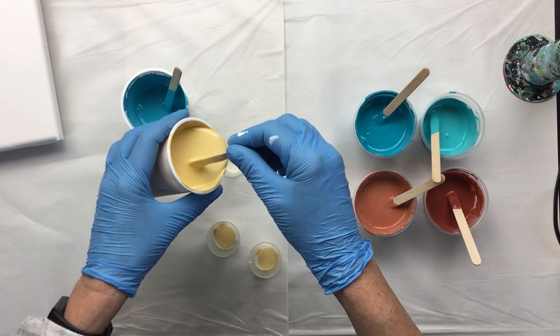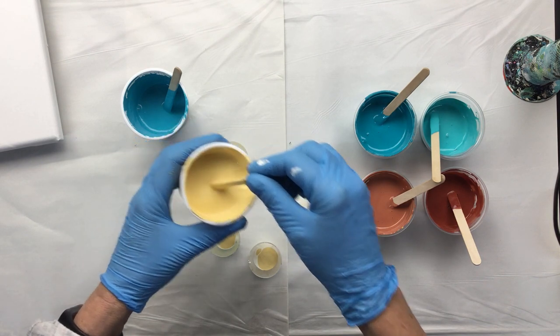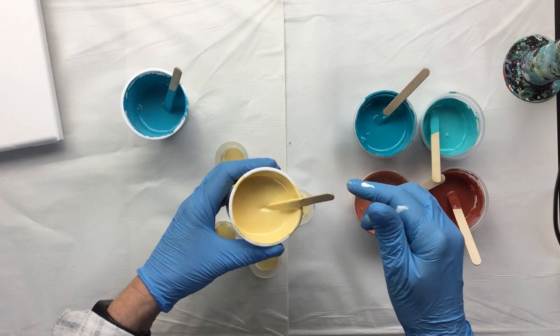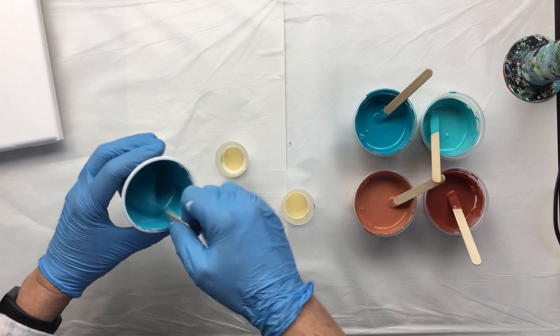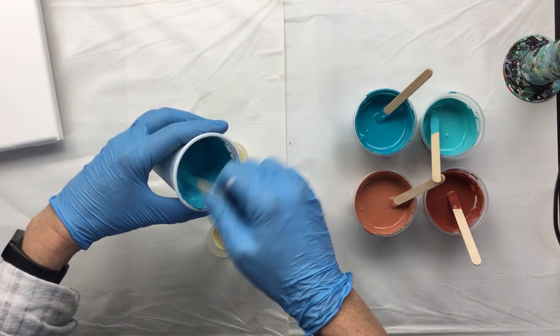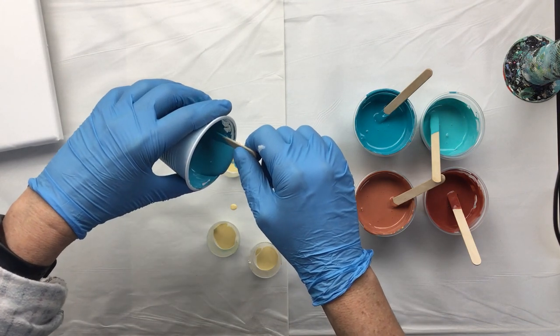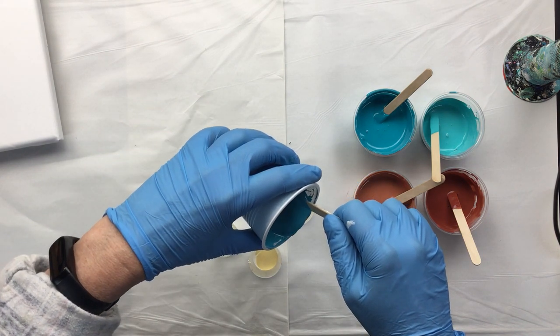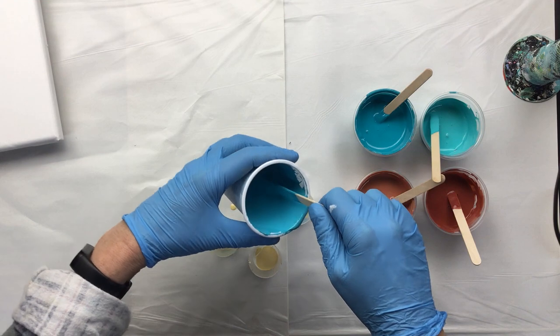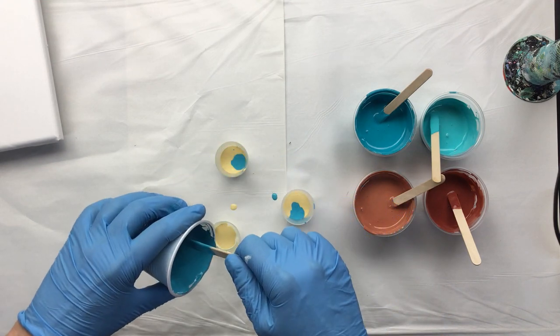Then I want to come in with a nice turquoise blue and I'm pouring that from a little bit high so it goes straight through the layers that I already have.